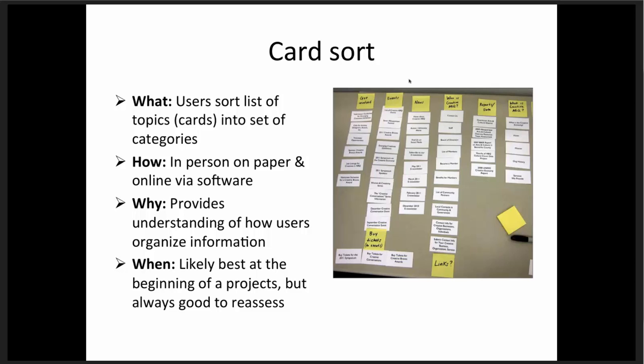A card sort is pretty much what it sounds like. We actually created a really large board with envelopes and gave the person a stack of cards and asked them to sort them — that's really what you do, whether on paper or virtual. You're giving them a set of cards and asking them to organize them into a set of categories that you've given them. We often have an 'I don't know where this should go' category to see if there's an outlier we haven't accommodated. You can do this in person on paper or online unmoderated. This really provides a great understanding of how users organize information.